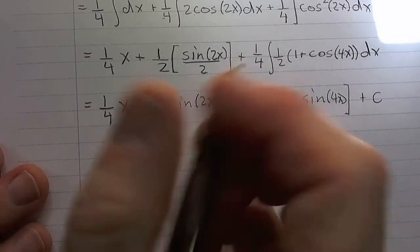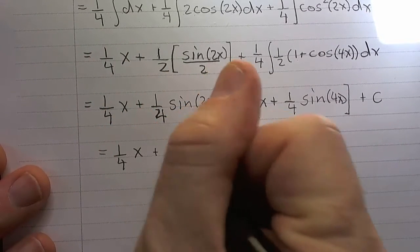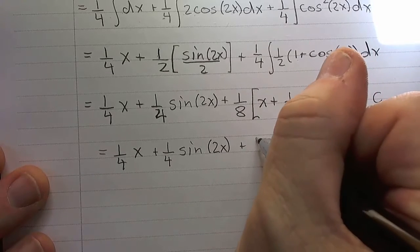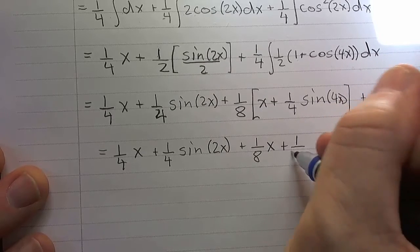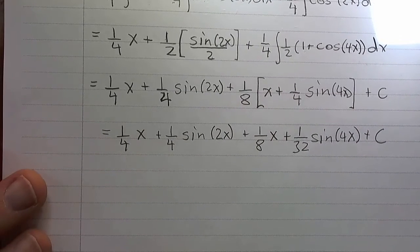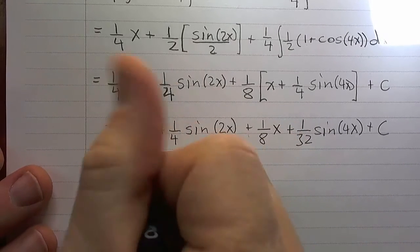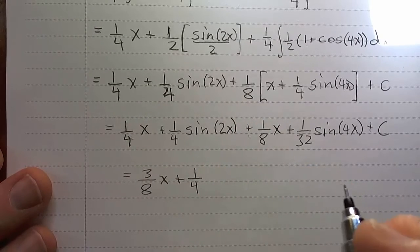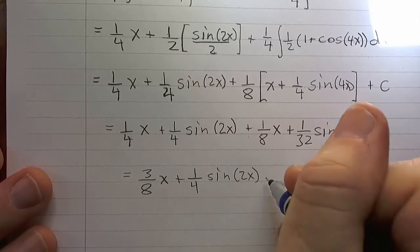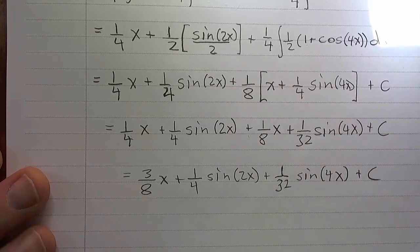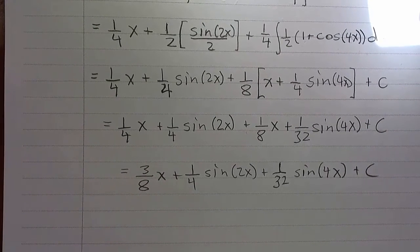Putting everything together, we have one-fourth x plus one-fourth sine two x plus one-eighth x plus one-thirty-second sine four x plus c. Combining the one-fourth and one-eighth gives three-eighths, so the final answer is three-eighths x plus one-fourth sine two x plus one-thirty-second sine four x plus c. That's how we deal with sine or cosine raised to an even power.